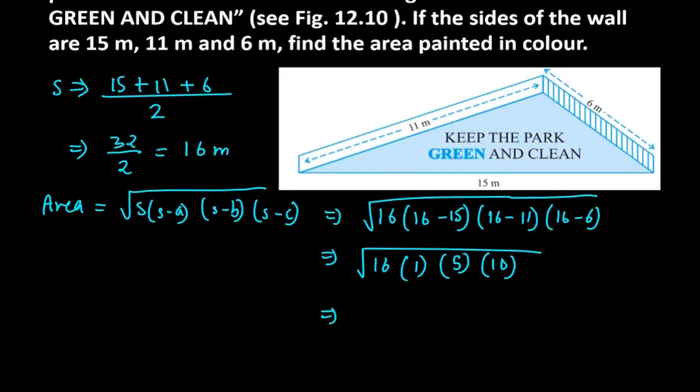Note that 16 can be written as 2 into 2 into 2 into 2. 5 remains as it is. 10 can be written as 2 into 5. Now 2 pairs are forming, 5 pairs are forming.